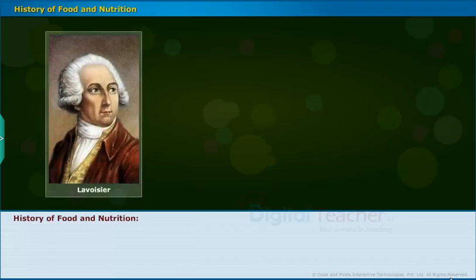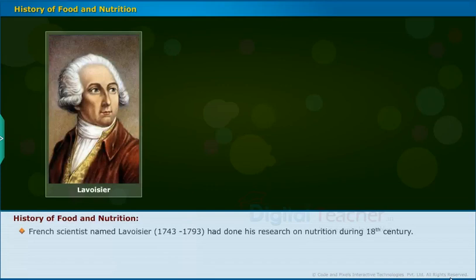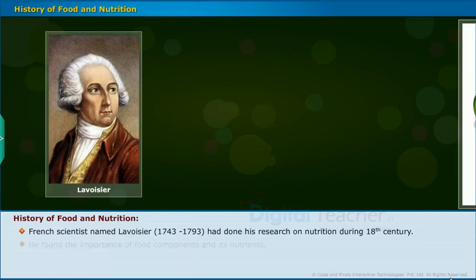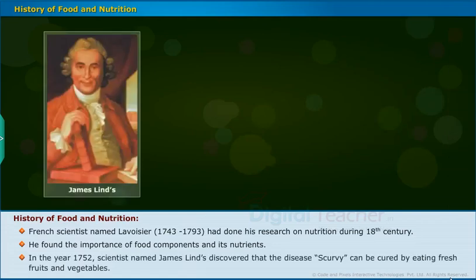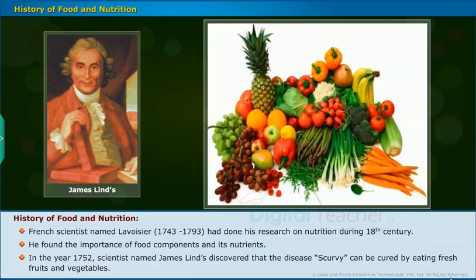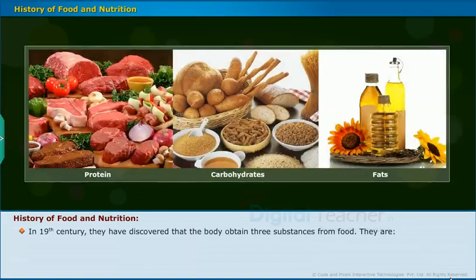Let us know about the history of food and nutrition. French scientist Lavoisier (1743–1793) did research on nutrition during the 18th century and found the importance of food components and their nutrients. In the year 1752, scientist James Lind discovered that the disease scurvy can be cured by eating fresh fruits and vegetables. In the 19th century, scientists discovered that the body obtains three substances from food: proteins, fats, and carbohydrates.